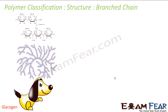The second type is the branched chain polymer. These polymers contain a linear chain but also have some branches coming off it. An example is glycogen — you can see glycogen has a long main chain, but there are some branches attached to it.